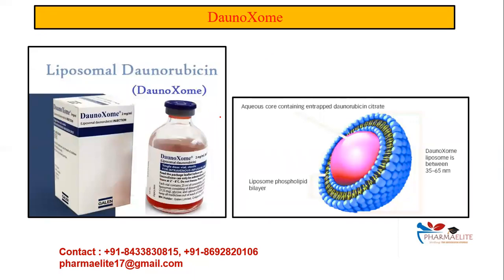Similarly, DaunoXome is the liposomal form of daunorubicin. It contains an aqueous core with entrapped daunorubicin citrate, surrounded by a liposomal phospholipid bilayer. So Doxil and DaunoXome are the two key liposomal preparations to remember.